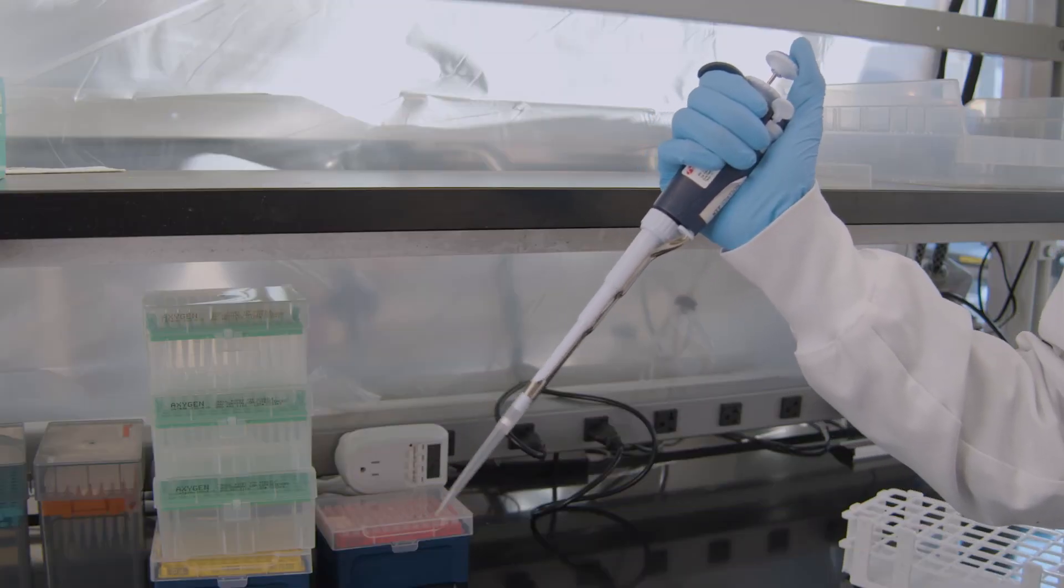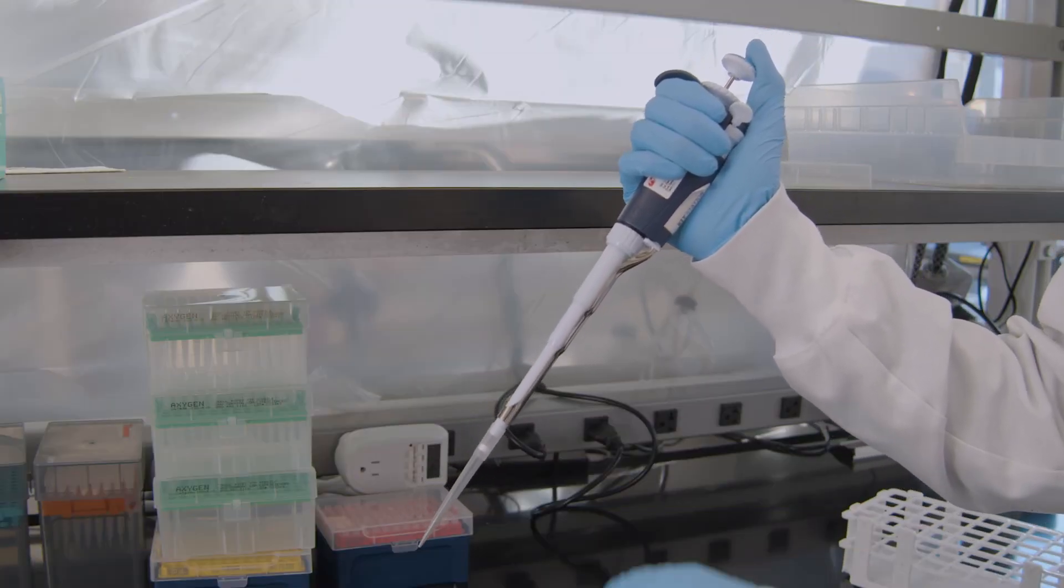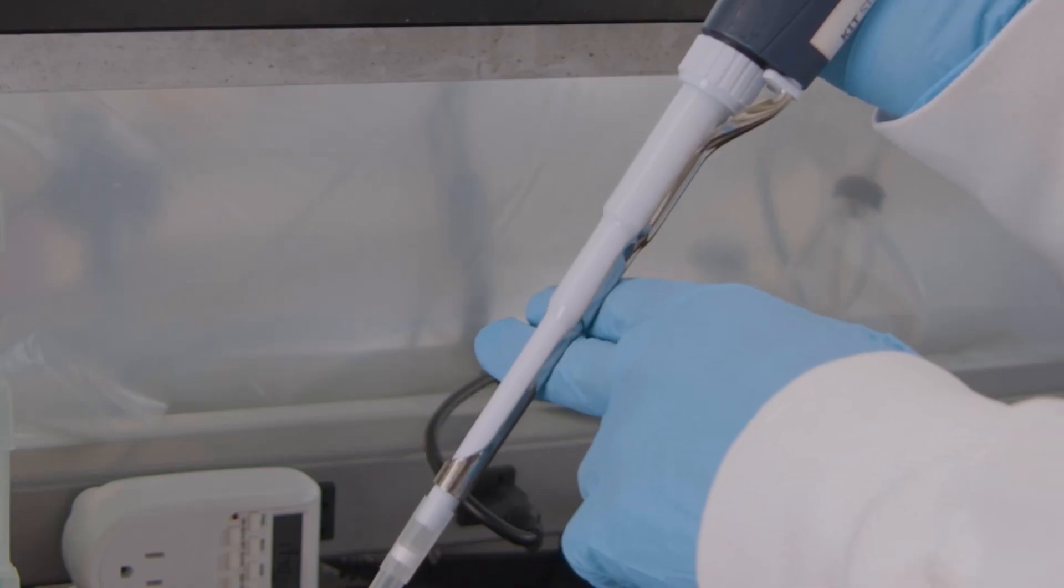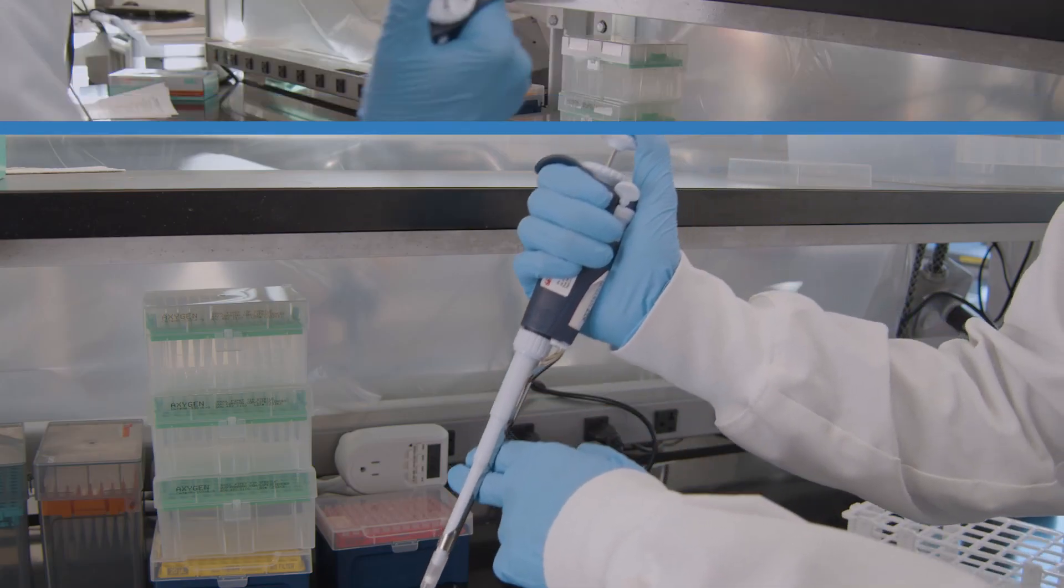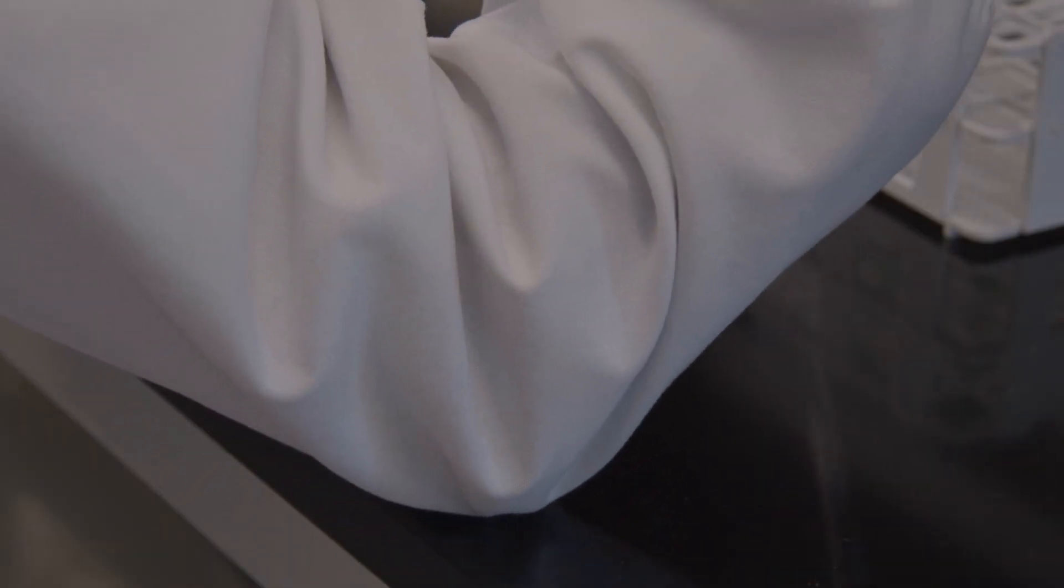If you're struggling with hand steadiness or accuracy, try putting two fingers on the pipette for support. You can also rest the elbow of your pipetting arm on the bench for added stability.